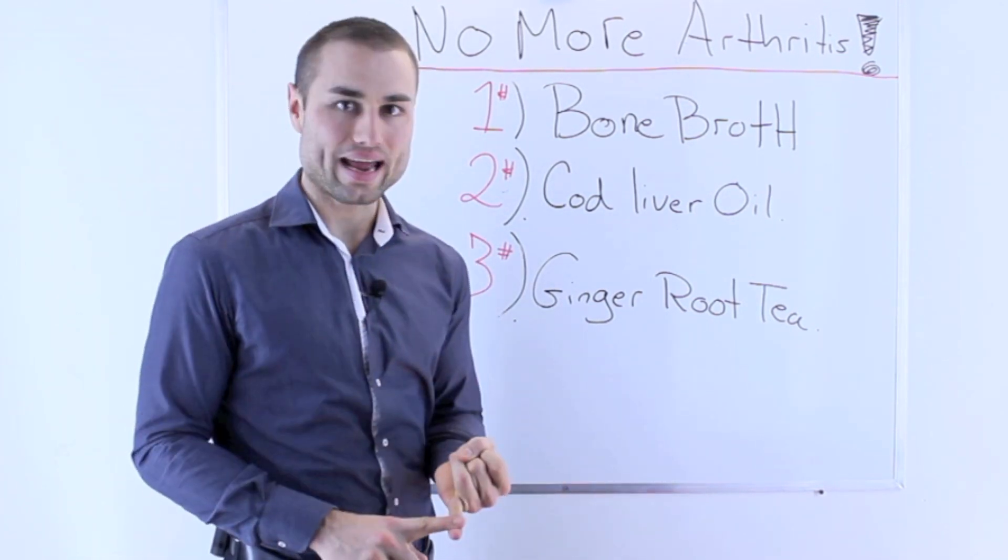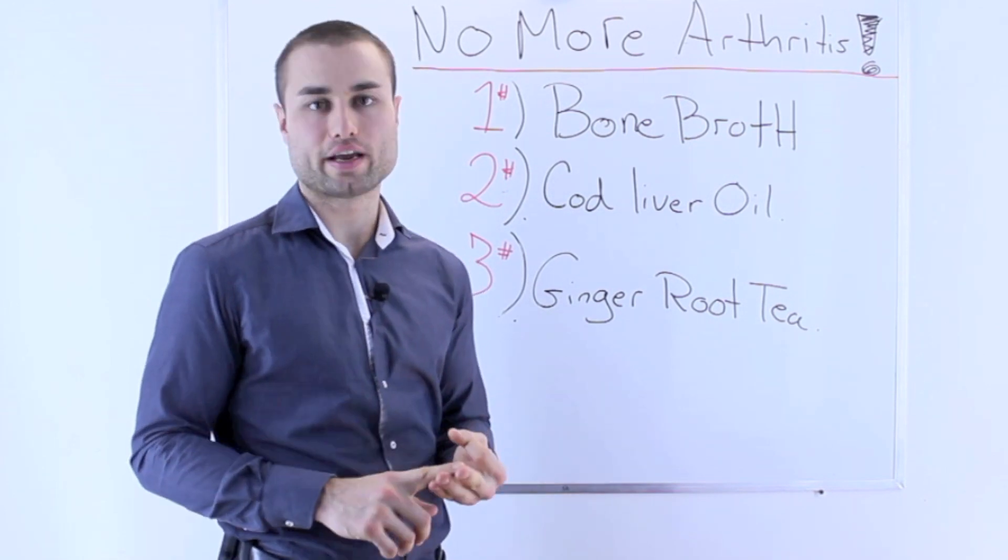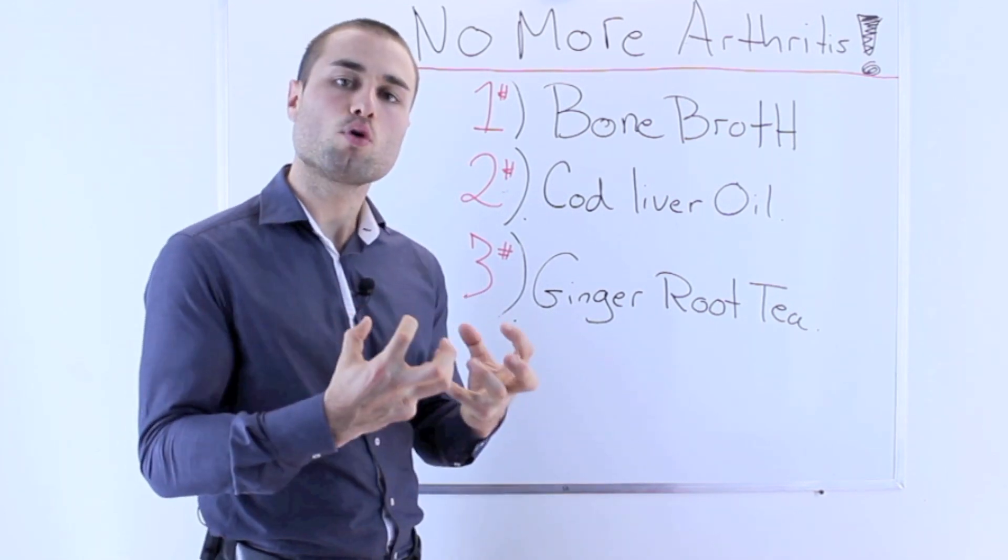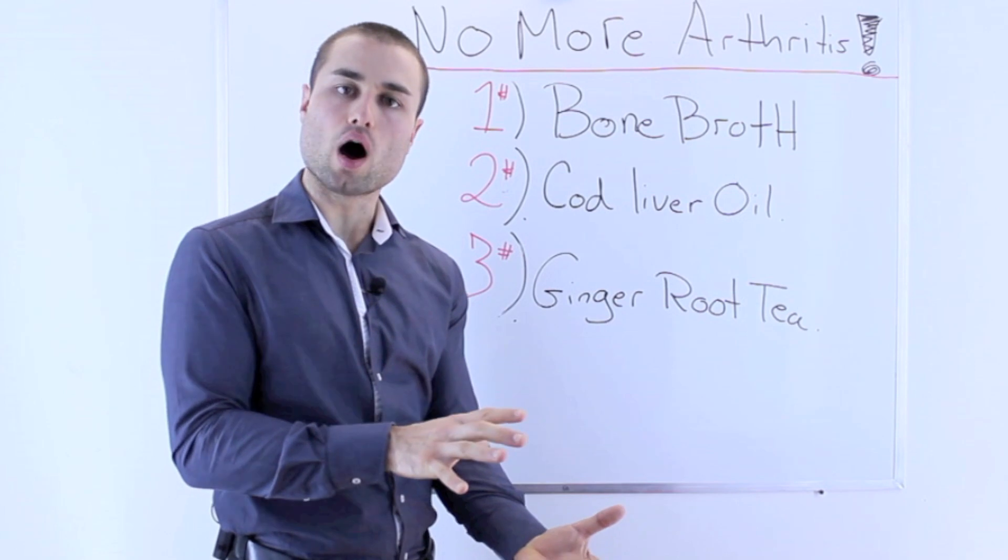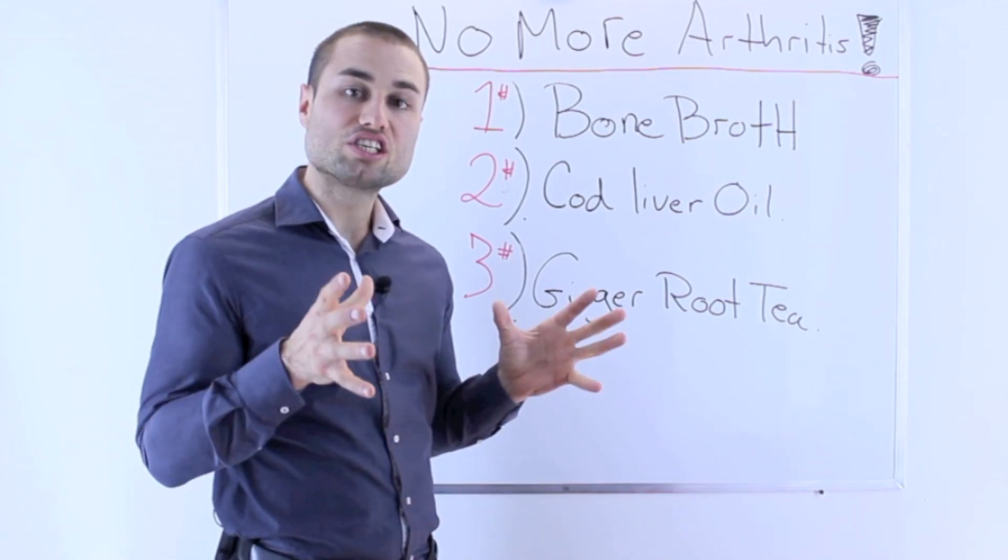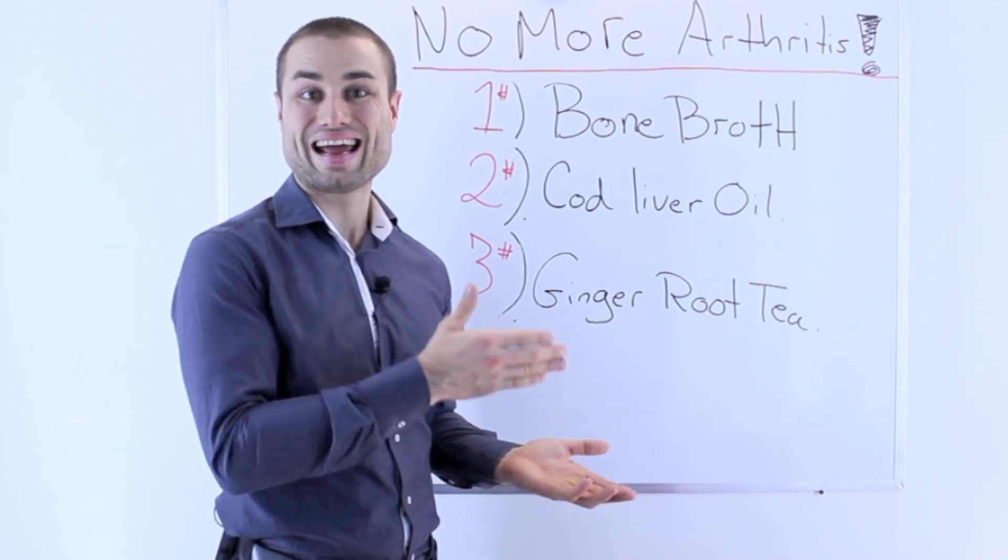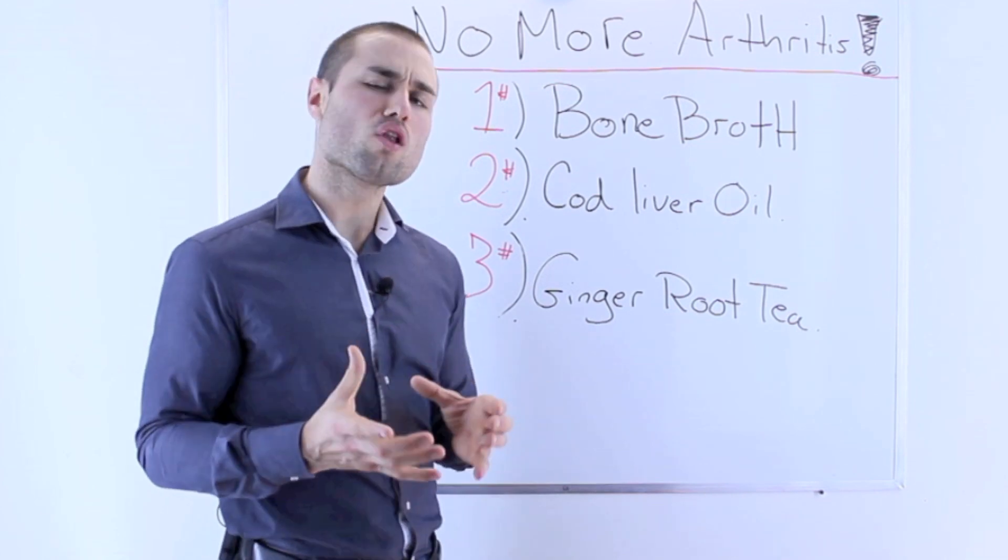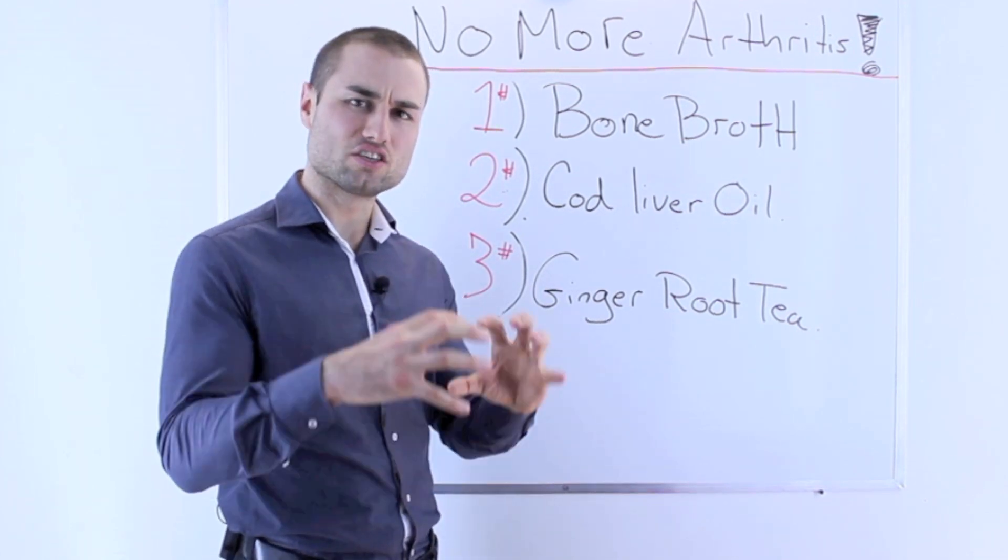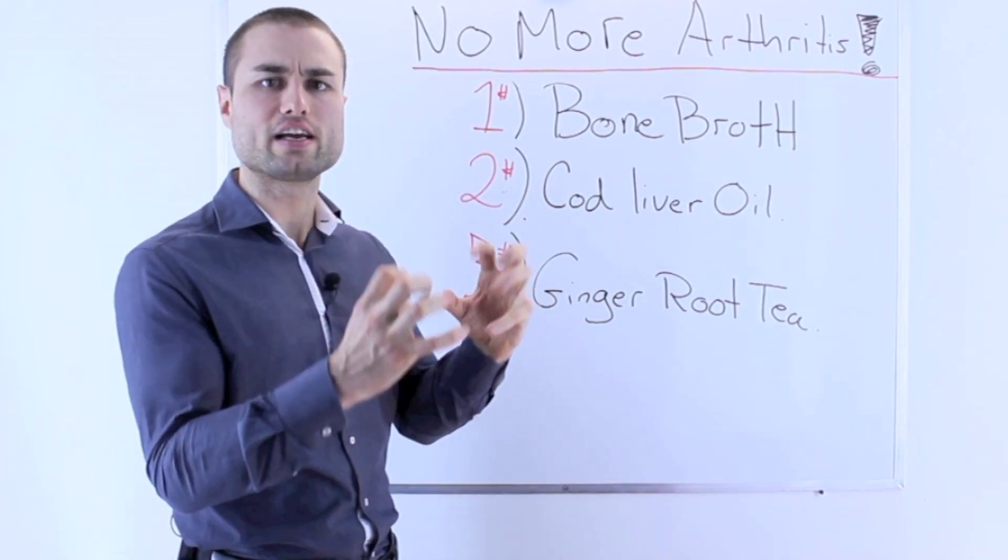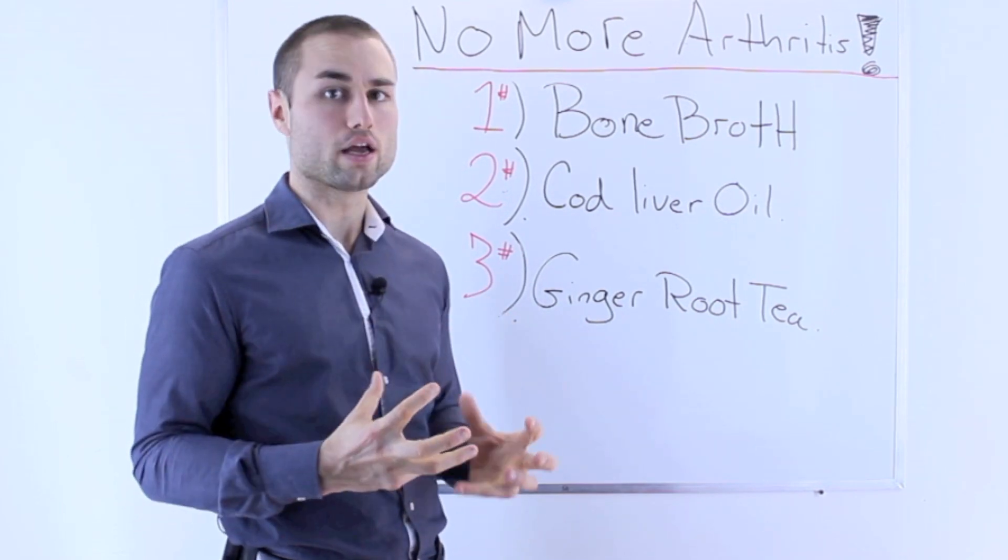So you grab all these bones, you put them in a pot, you add water, and you simmer it for anywhere from eight to ten hours. And what you're left with at the end of that is a gelatinous jelly that shakes around.